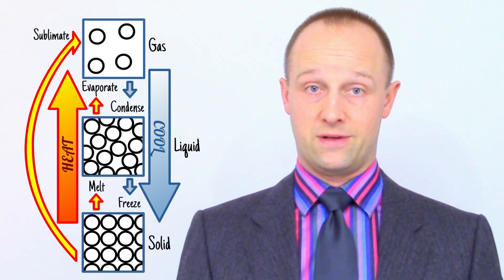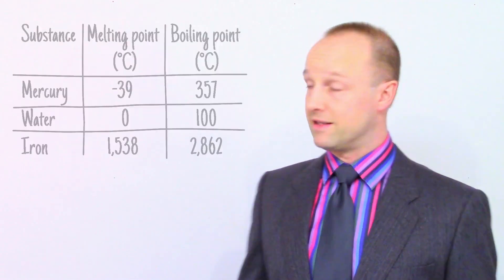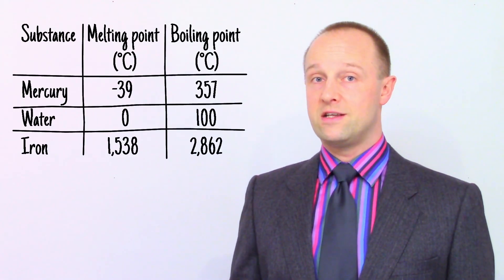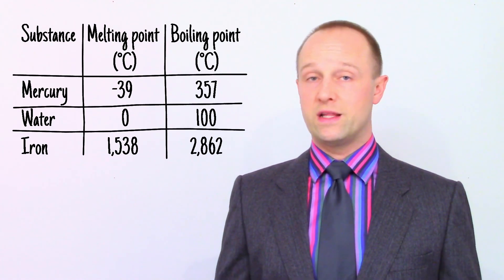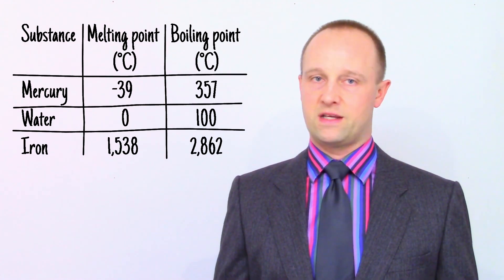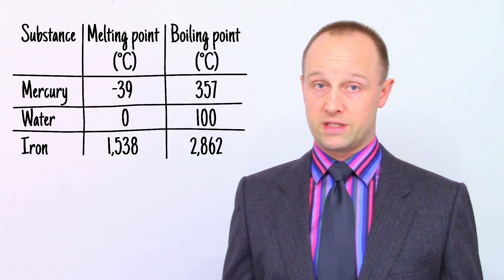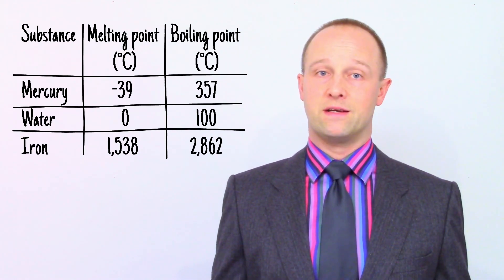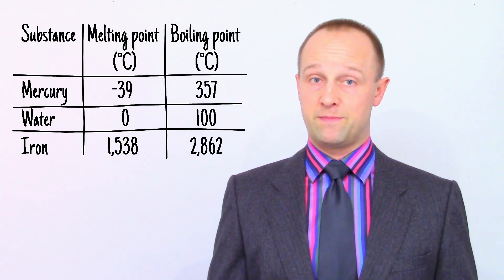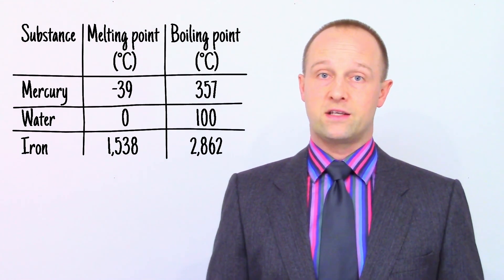One way an exam paper might get you to think about states of matter is by giving you a table of data like this. Notice each substance has a melting point and a boiling point. All you really need to be aware of is that if the temperature is below the melting point, then the substance is still frozen solid. If it's between melting and boiling, then it's a liquid. And if the temperature is above boiling, then it's a gas.